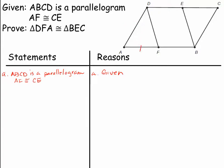We also have given information that AF is congruent to CE. I like to go ahead and mark up what's given. What I need to prove is that triangle DFA is congruent to triangle BEC — so we're looking at this triangle being congruent to that triangle. We have those theorems and postulates: angle-angle-side, side-angle-side, side-side-side. I already know that one set of corresponding sides are congruent, so I need to prove other sides or angles are congruent.